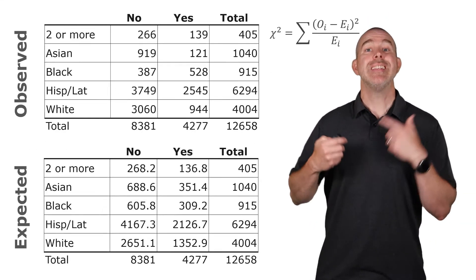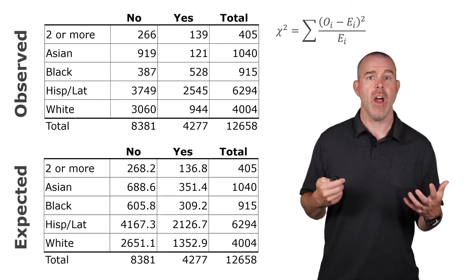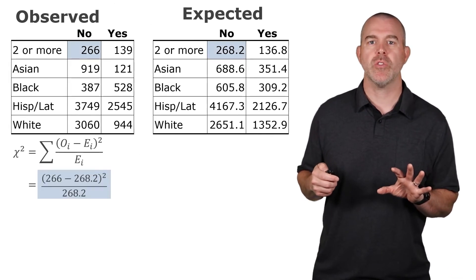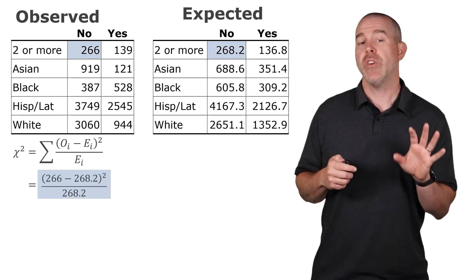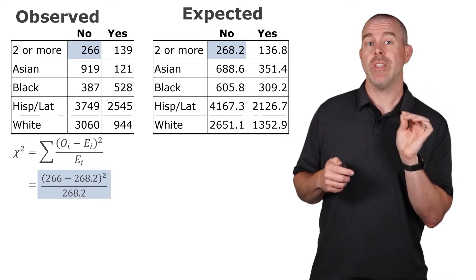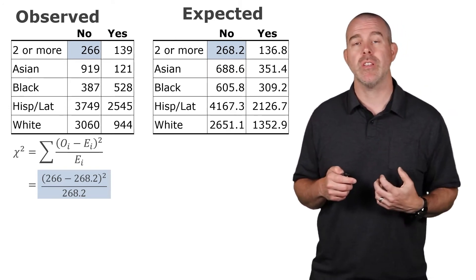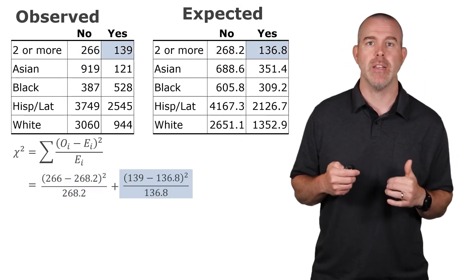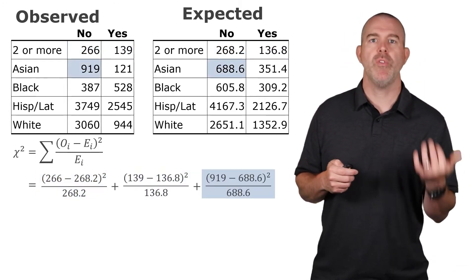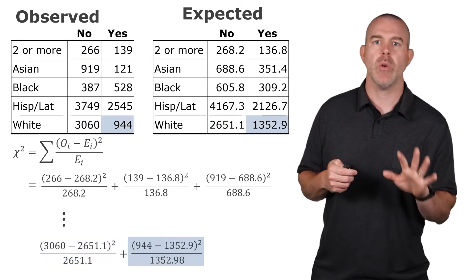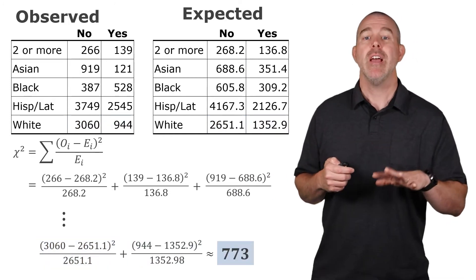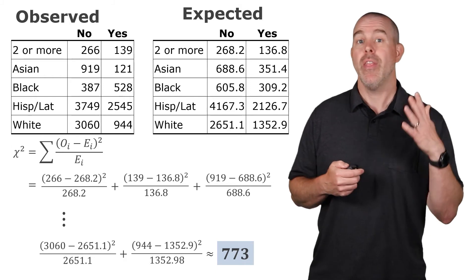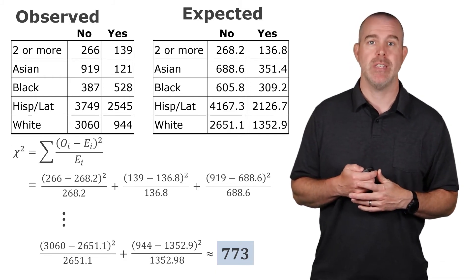Let's take that test statistic and compute it for our data. For the first cell, the observed is 266, the expected is 268.2 — we subtract those, square it, and divide by the expected. Doing the same thing across all cells, we get a total chi-squared of 773. That's going to be our test statistic.